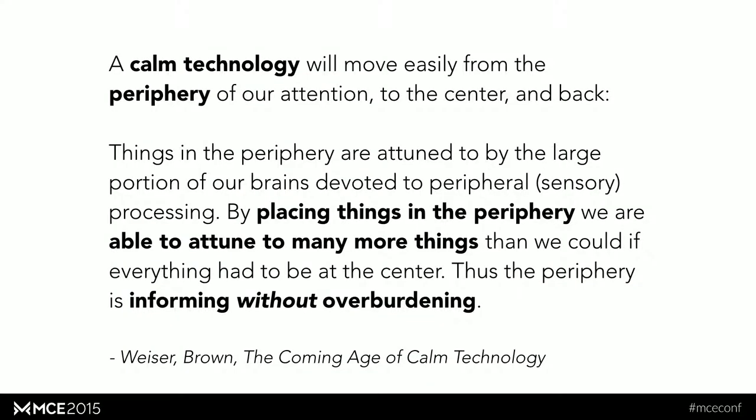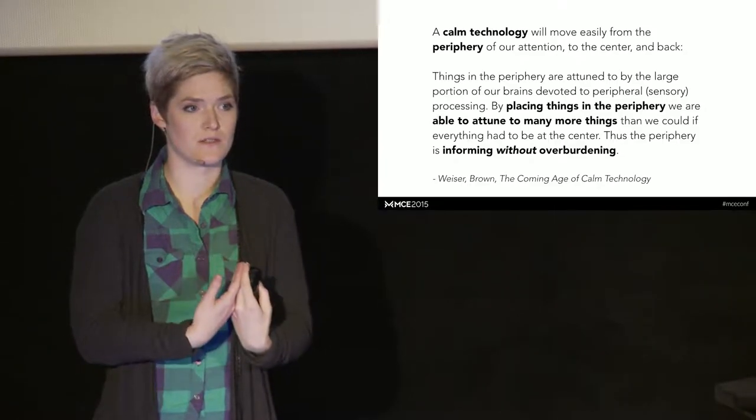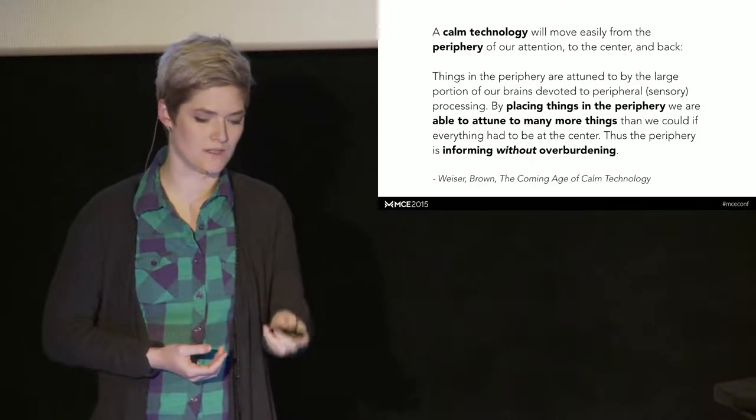And this kind of ambient notification style allows you to have many devices in your home without getting totally overwhelmed. So how do we do this? This is another quote from the paper. If a technology is calm, it can move from the center of your attention and back again very easily without getting in the way or distracting you from your primary task. And so then you can have information that's informing without overburdening.